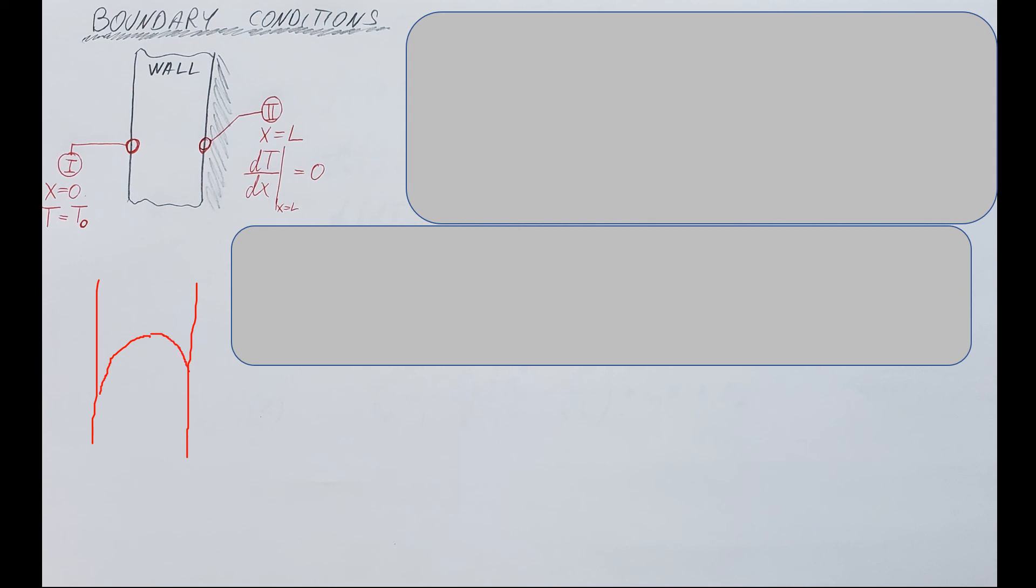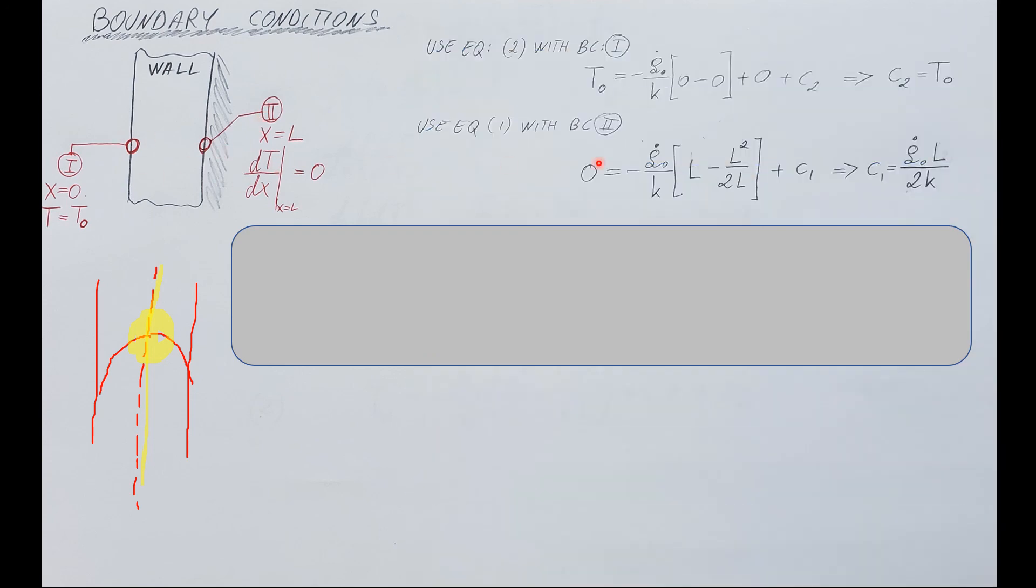Most textbooks have a sketch where if we would have a volumetric generation in the wall, then this would be the temperature profile. Right here in the middle is a symmetry line, so this insulation would be exactly the same situation as us being right here on this symmetry line. We can see that here at this point the curve is flat, therefore the change is equal to zero. So that is exactly what we have up here.